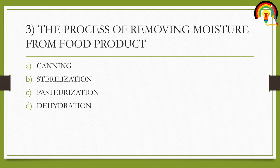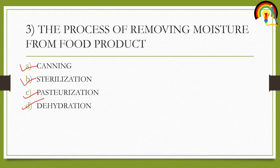The third question: the process of removing moisture from a food product is — options are: A) canning, B) sterilization, C) pasteurization, and D) dehydration. You have 10 seconds. We've discussed all these definitions in previous classes — just give the answer.